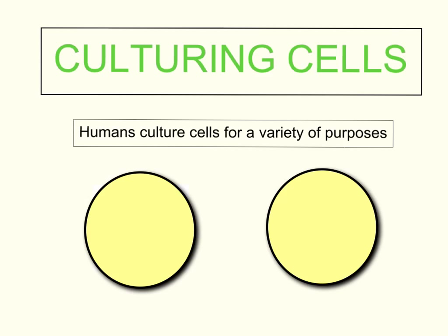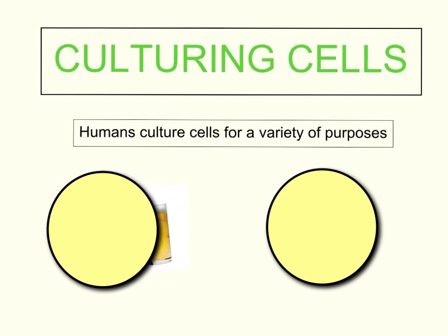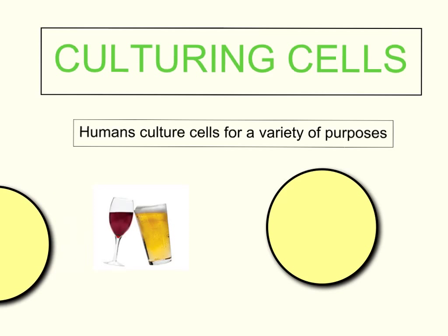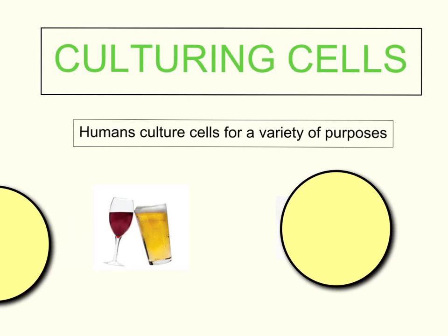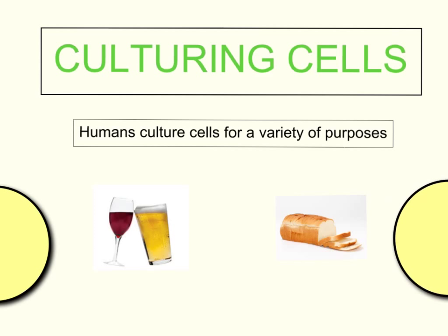What we need to look at first is that humans have actually been culturing cells for thousands of years without realising it, and they've been doing so in a couple of different ways. First of all, in brewing beer and in winemaking. Yeast fermentation is involved in the production of alcohol, and that is an example of cell culturing with the culturing of yeast cells. The second example, using yeast again, is in bread making - another very old example of where humans have used cell culturing.